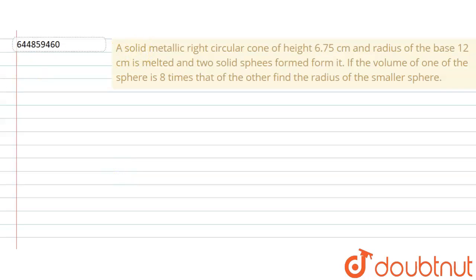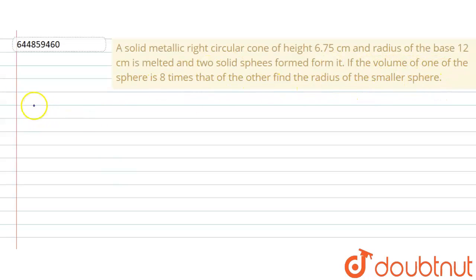The question says a solid metallic right circular cone of height 6.75 centimeters and radius of the base 12 centimeters is melted and two solid spheres are formed from it. If the volume of one of the spheres is eight times that of the other, find the radius of the smaller sphere.